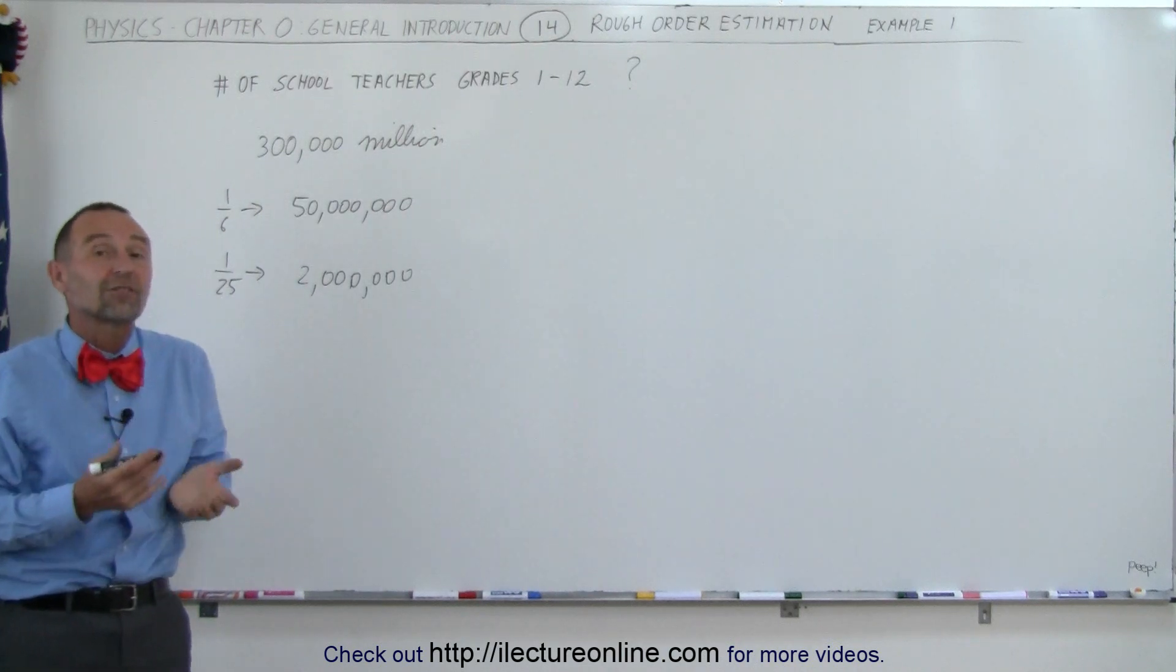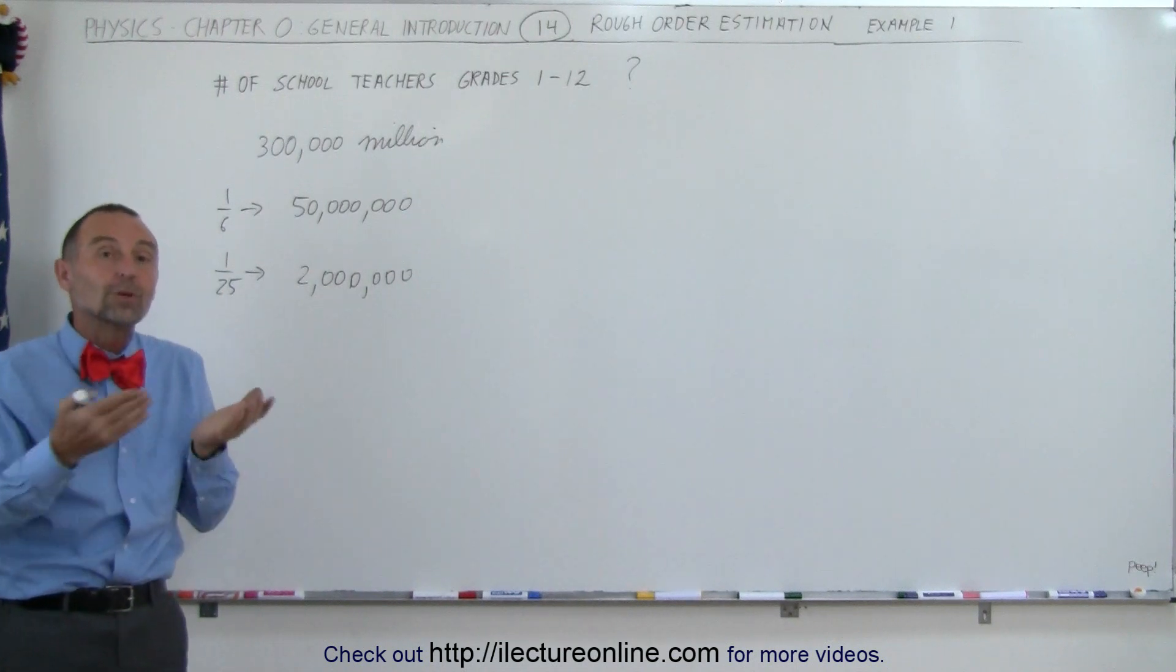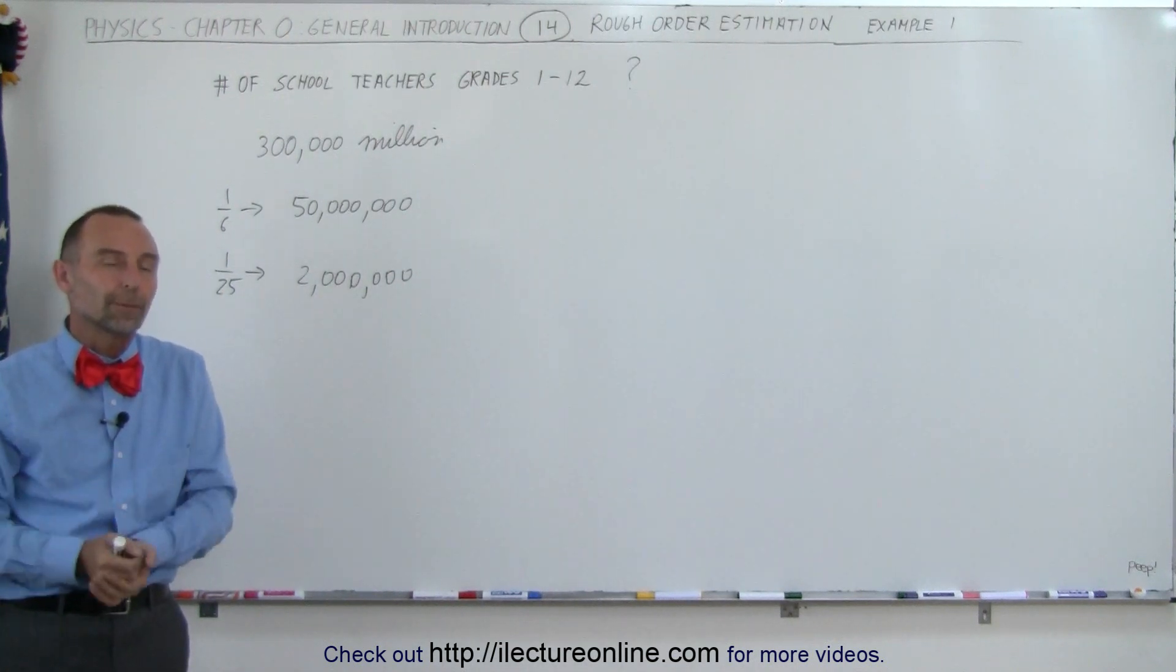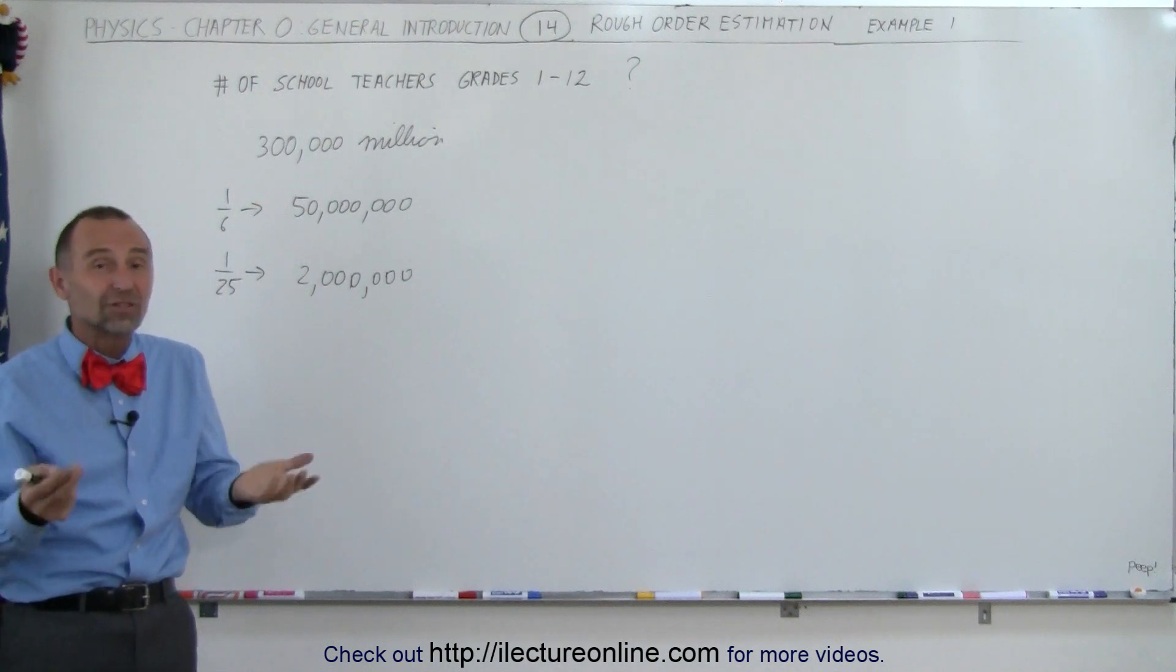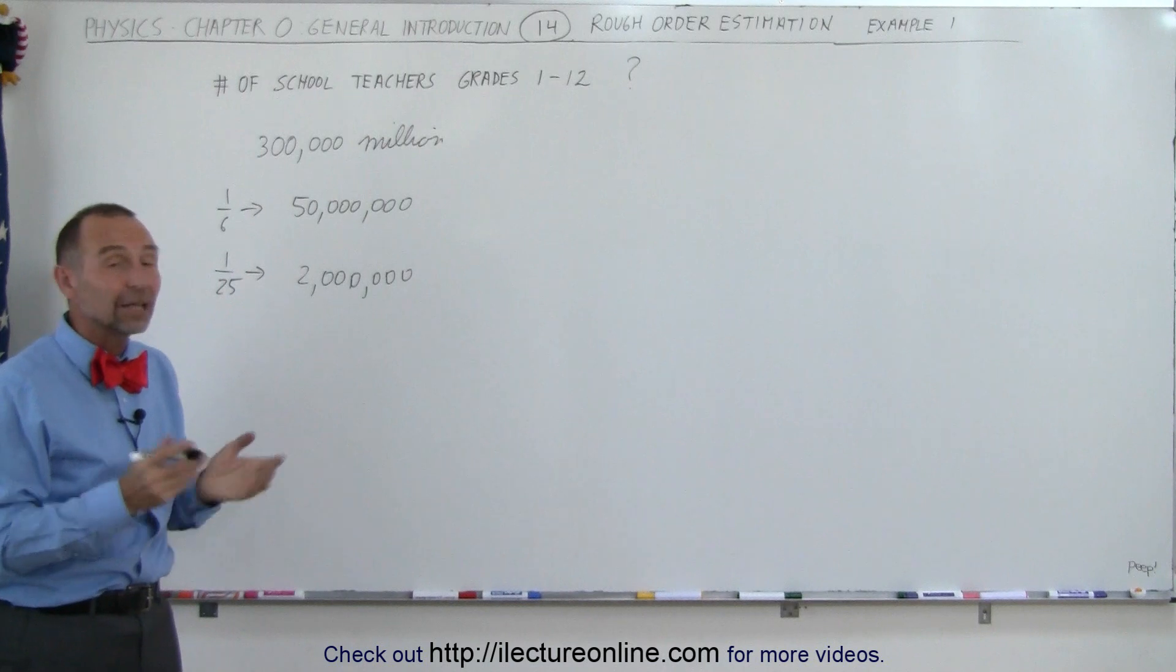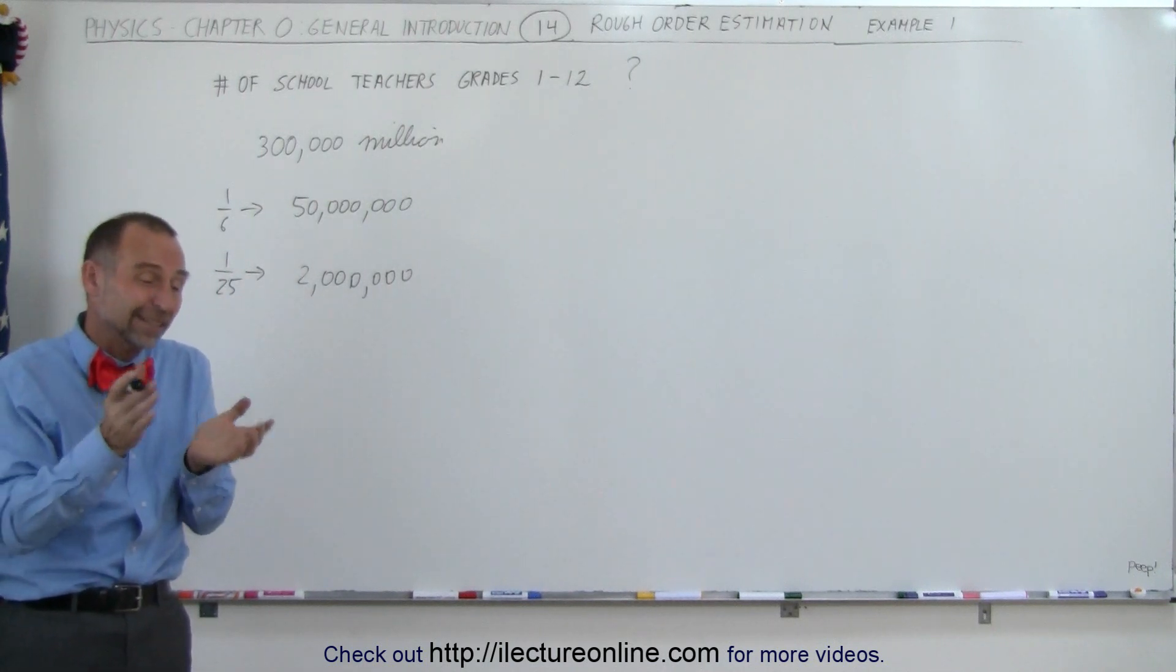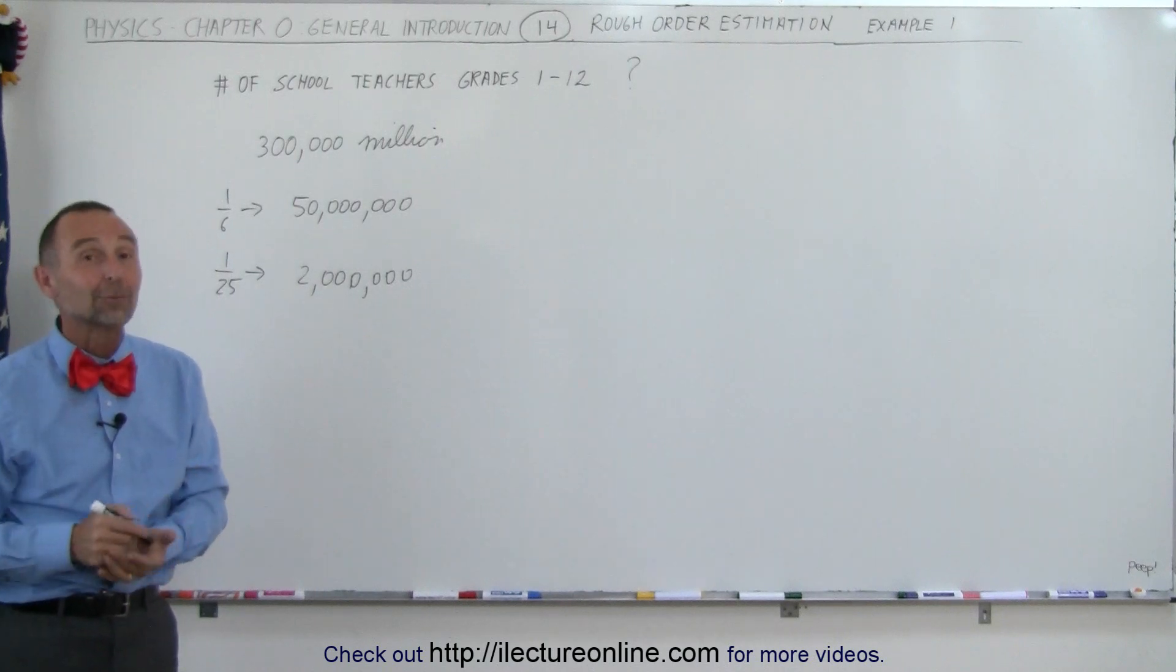And that's how we use that rough order estimation to very quickly, without a calculator, come up with a number that is a reasonable estimate to the true number. Now, how does that apply to a problem on the test? Again, you do the same basic thing, you round things off to very rough numbers, and then you just do a quick calculation in your head and say, yes, that's about right, or no, my answer is completely wrong, I better go back and recalculate it.